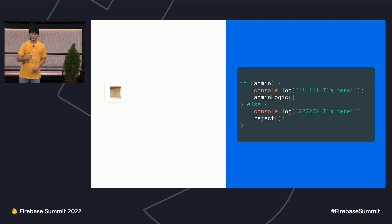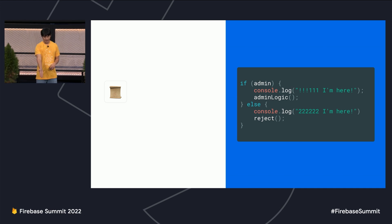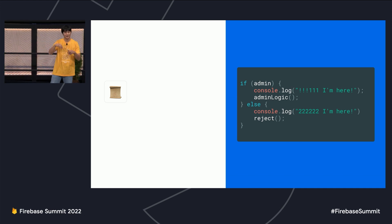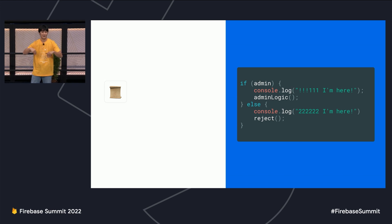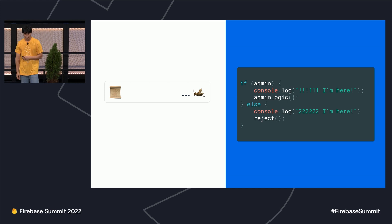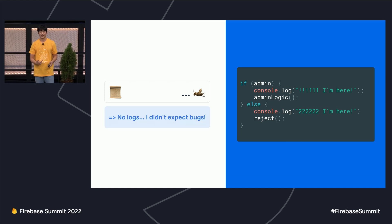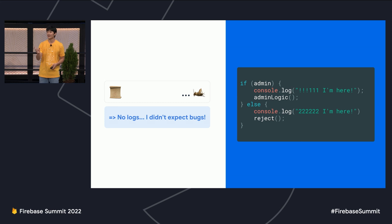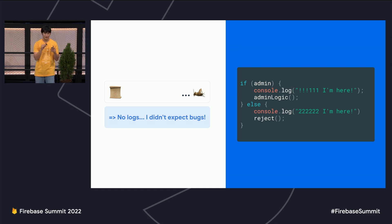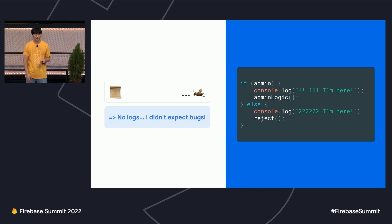I like to jump back into logs. We write logs to understand the code we write — how is it actually running on the CPU? But the problem is that Suna didn't write any logs. She didn't expect to need them. Logs are intentional, they're explicit — you're leaving breadcrumbs for yourself. In this case, Suna didn't leave any because she thought everything was good.